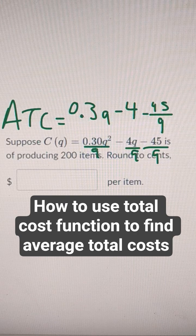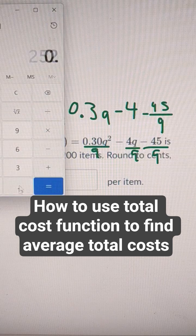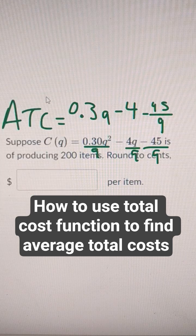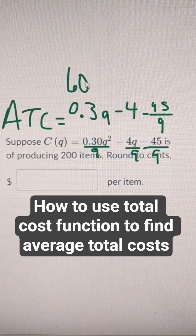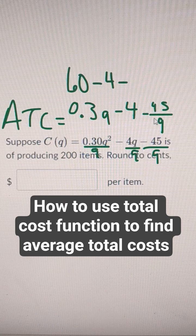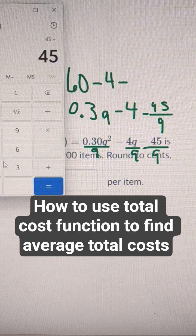So 0.3 times 200 is 60, so this number is 60, minus 4 minus 45 over 20.